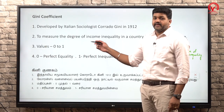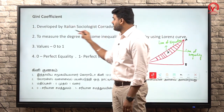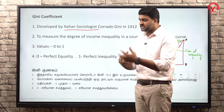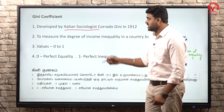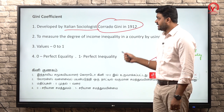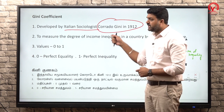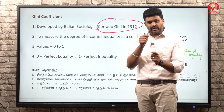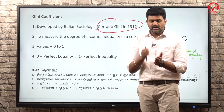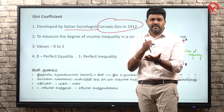Next, let's look at the Gini Coefficient. The Gini Coefficient was developed by an Italian sociologist and statistician - Corrado Gini - in 1912. The Lorenz Curve and wealth distribution are connected through the Gini Coefficient.